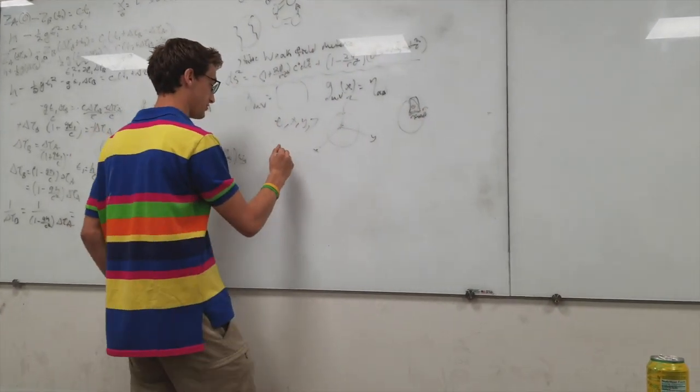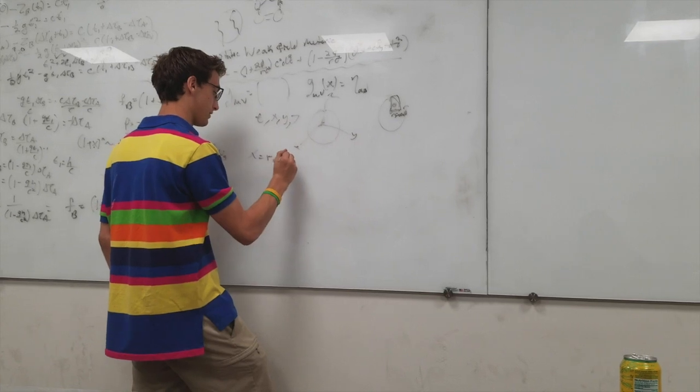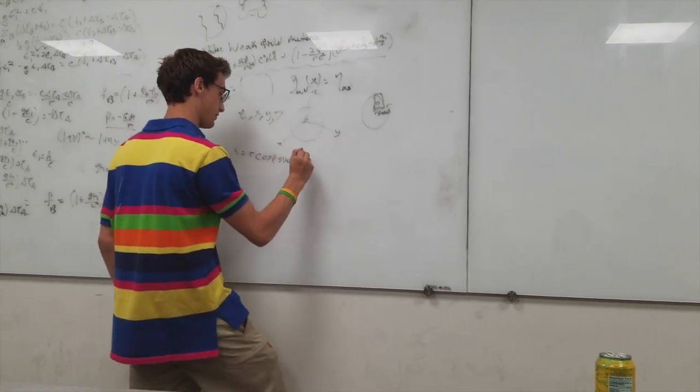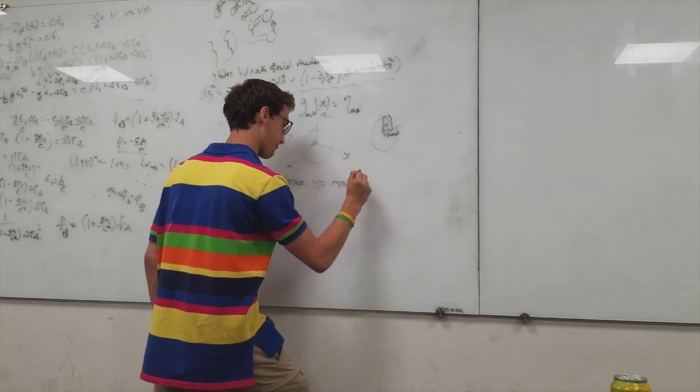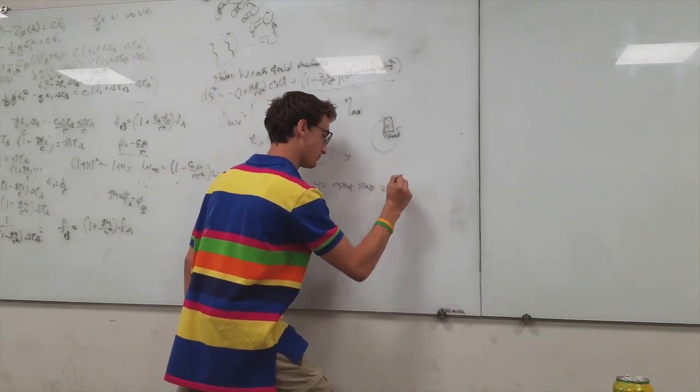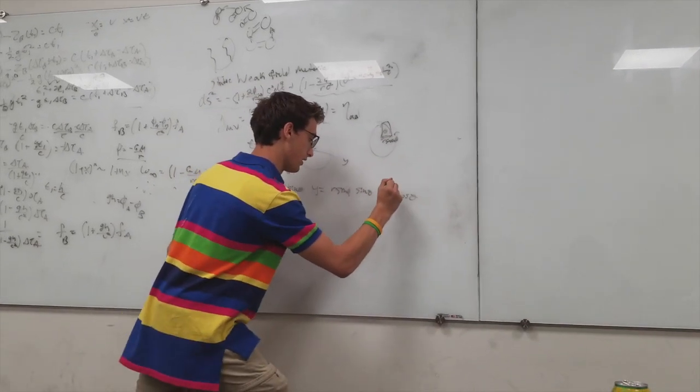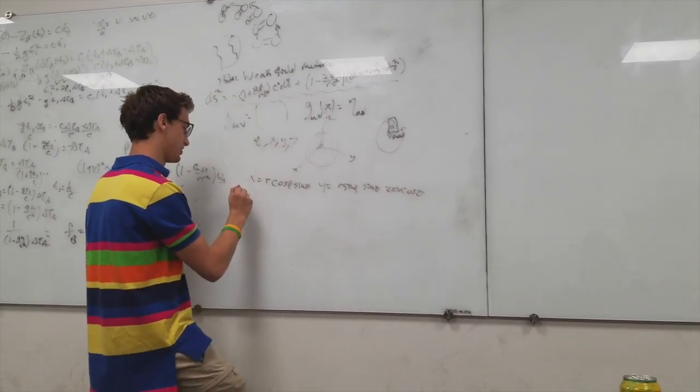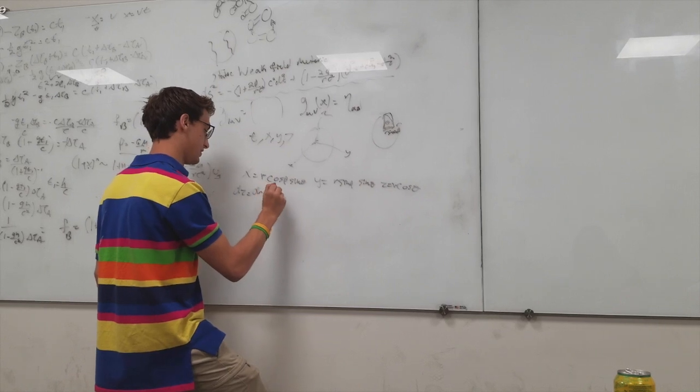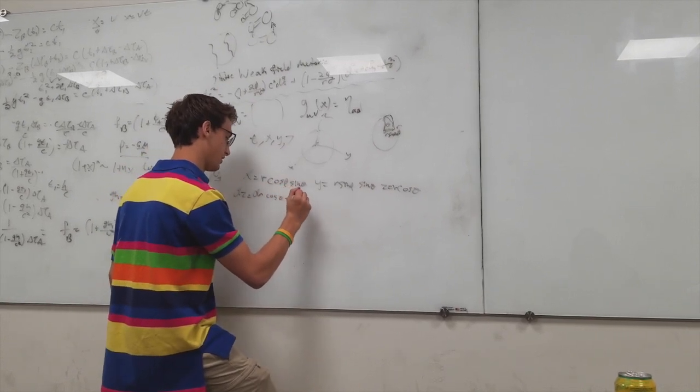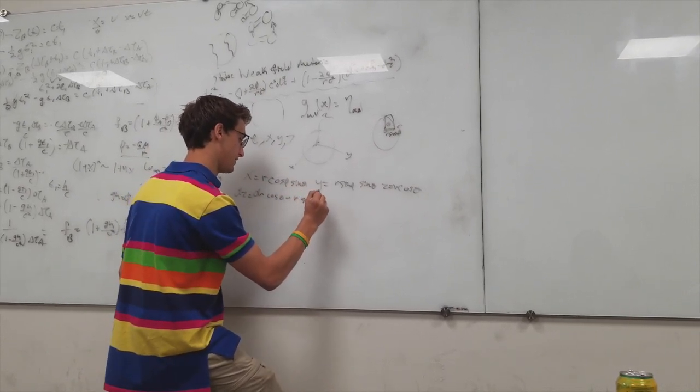So we can just make the transformations look like this. If we just take the differential of Z, really it's just dr cosine theta minus R sine theta d theta.